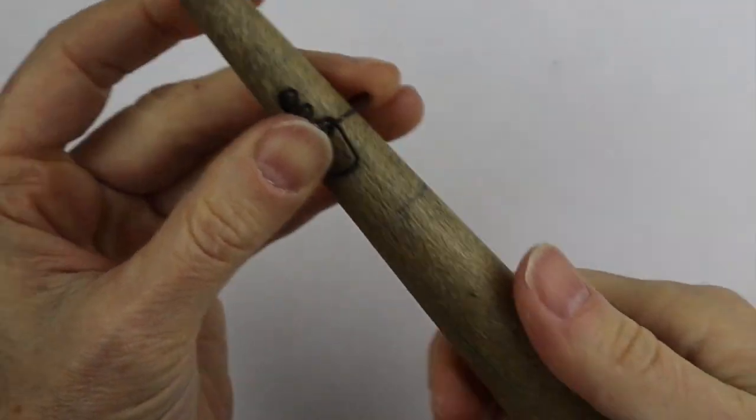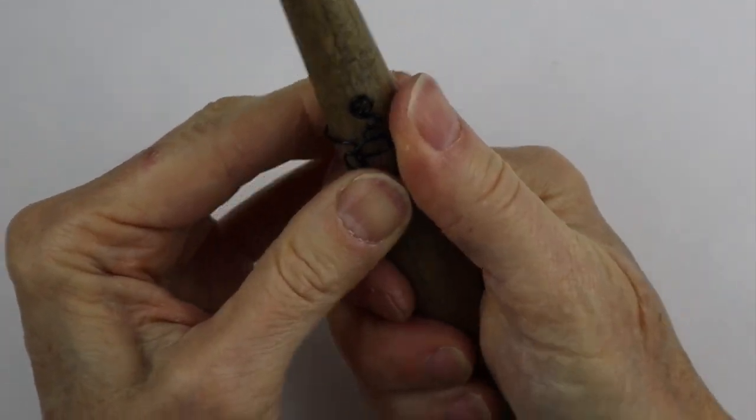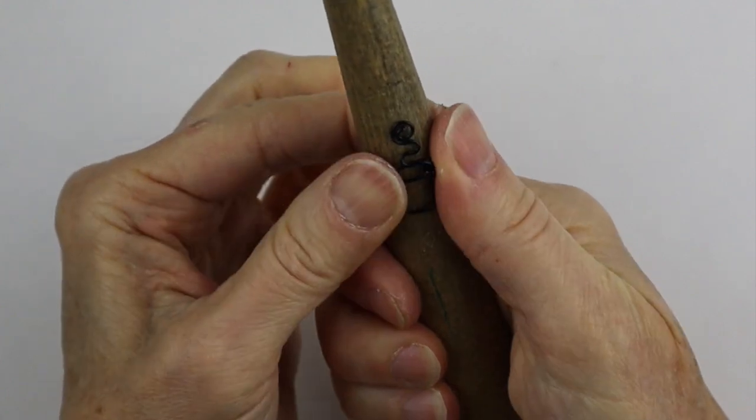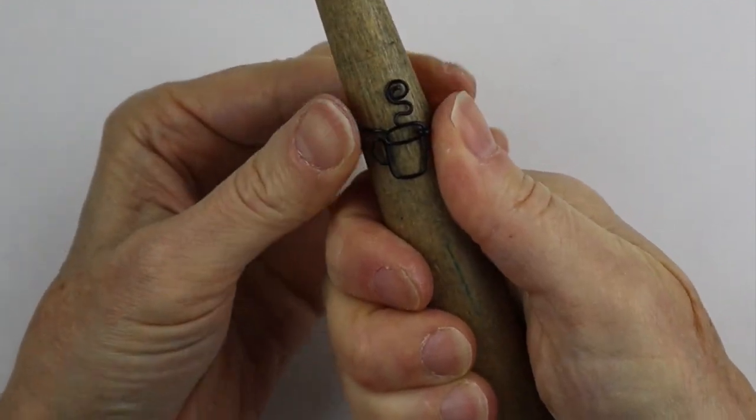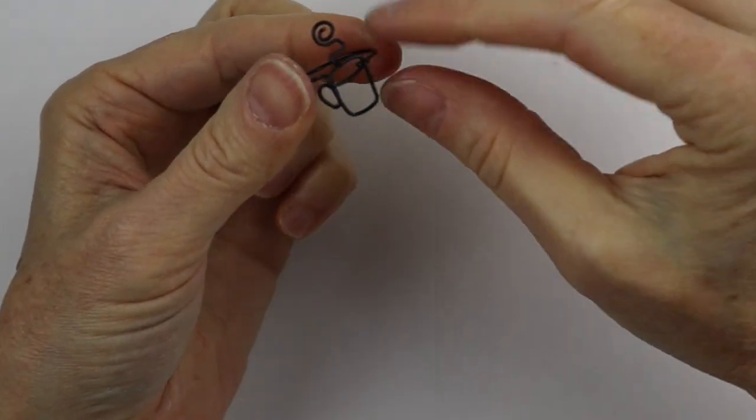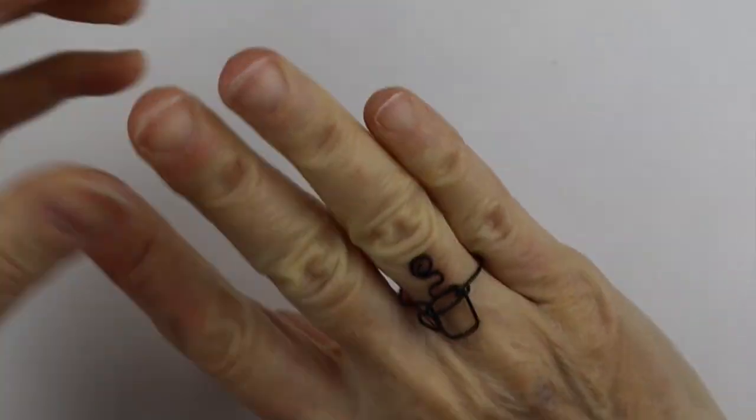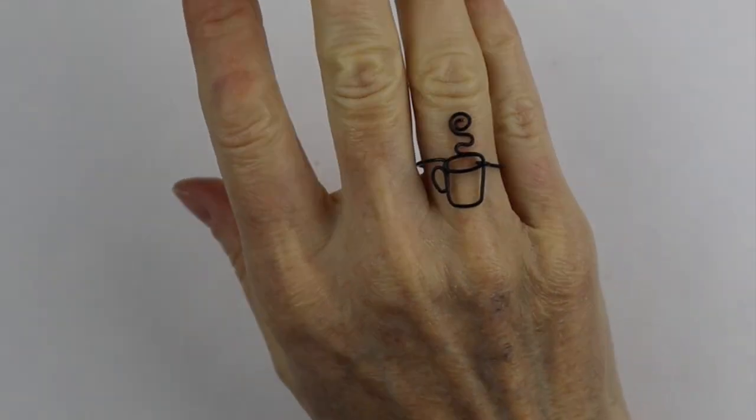And then always the finishing touch, you put it back on the ring cone and adjust it as you need to. And there you have your little coffee cup ring. That's super cute.